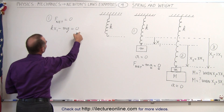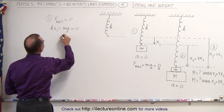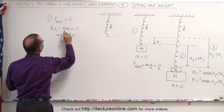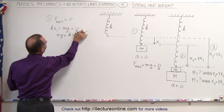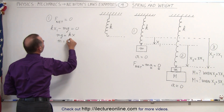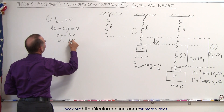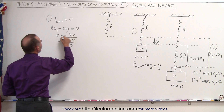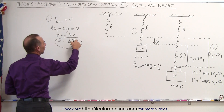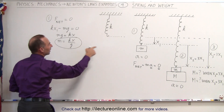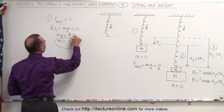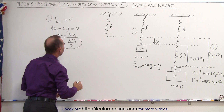This means that if we move this to the other side, we have mg is equal to kx1. Switching the equation around, m is equal to kx1 divided by g. So that will be the value of the small mass in terms of the spring constant, the distance elongated, and g — and since we call the distance x1, we keep calling it x1.